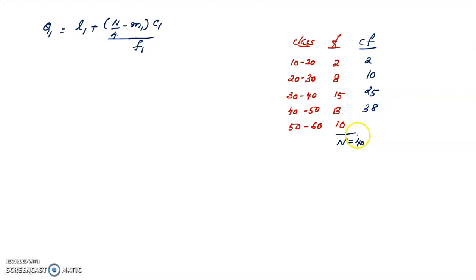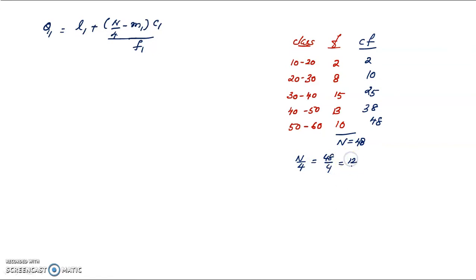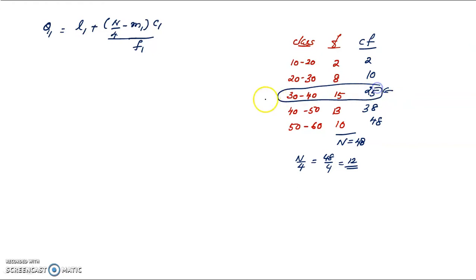For example, the median class is 38. 38 plus 10 is 48, so capital N equals 48. We find the N by 4th observation: 48 by 4 equals 12. The 12th observation determines the Q1 class. The cumulative frequency of 25 contains the 12th observation, so that is the Q1 class.